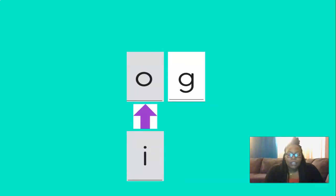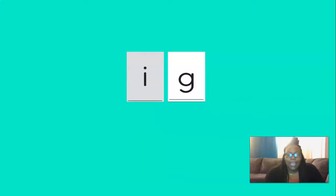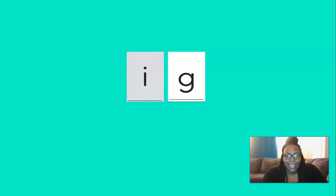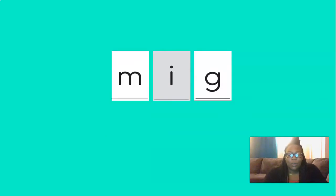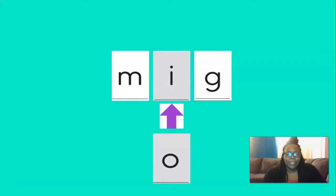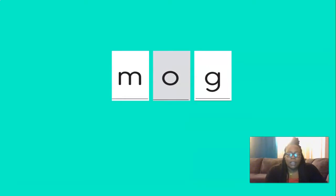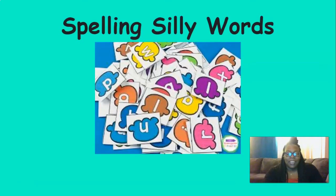If we change the A to an I, our new silly word is ig. I-G. These words are very silly! Now if we add an M in front of ig, our new word would be mig. M-I-G. Nice job. Great job chaining — we changed the silly words.